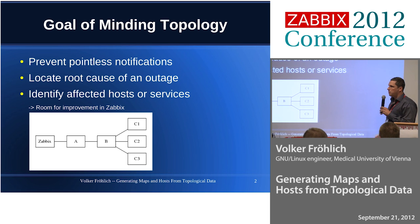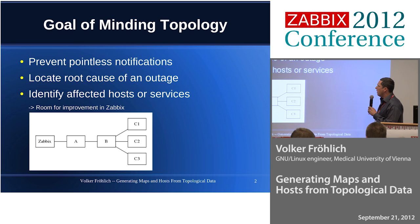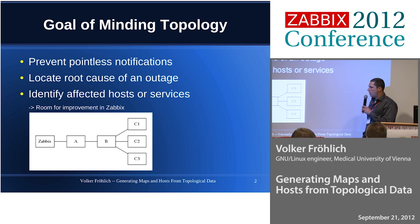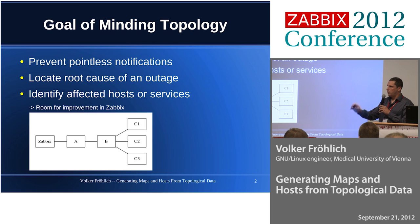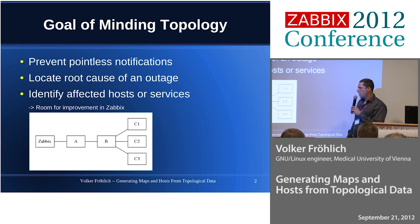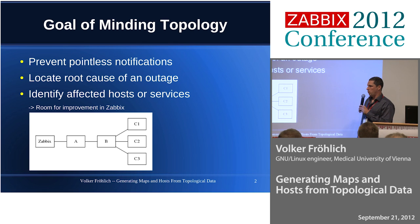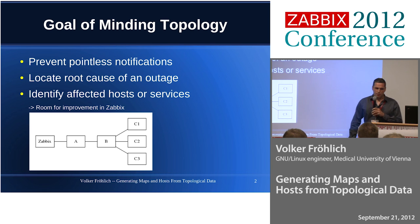One thing Zabbix is not as good at is showing which hosts are actually affected, because in the dashboard it will show us that B is failing — but what does that mean? How many hosts have we lost? We don't know that, but I will talk on that a bit later.